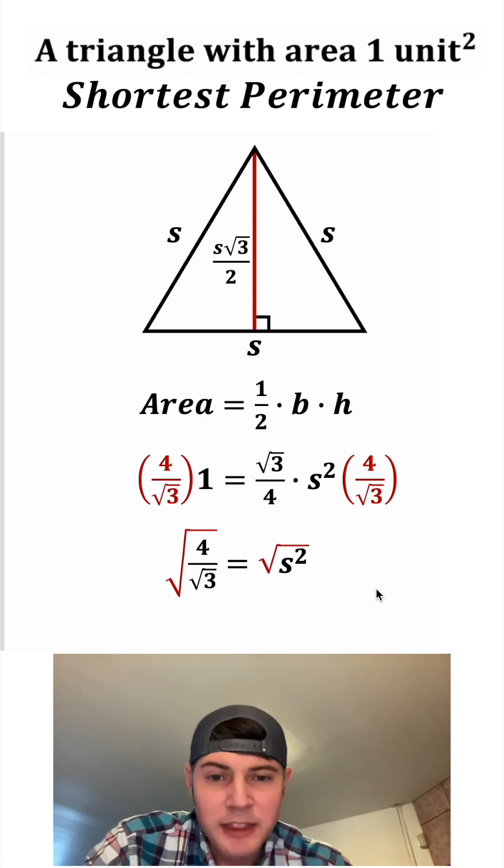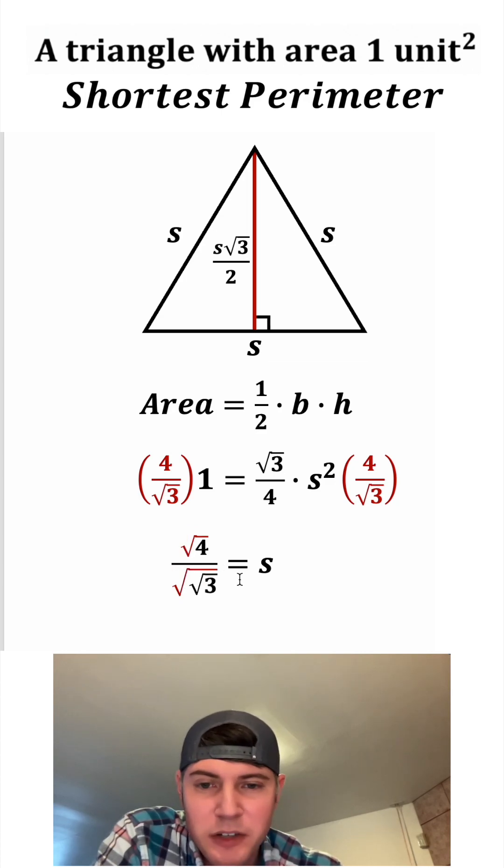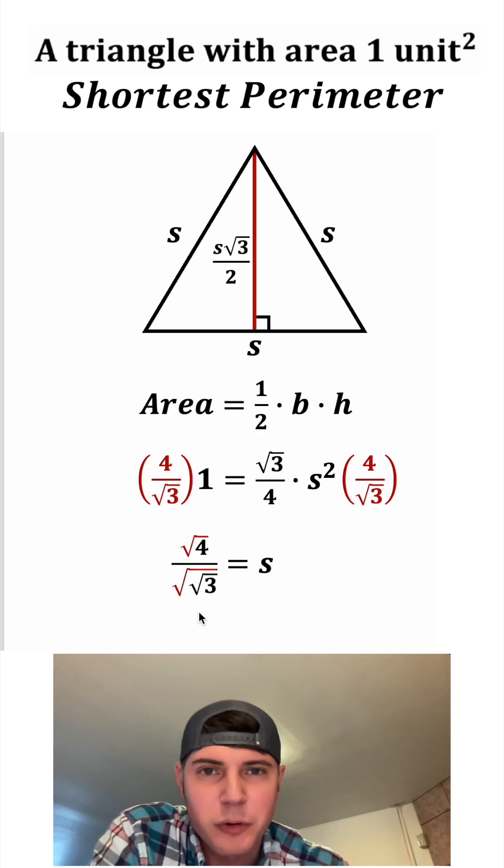All we have left is S squared. And then we can square root both sides. That makes this side S. And this square root can be distributed to both the top and the bottom, which would give us square root of four over square root of square root of three.